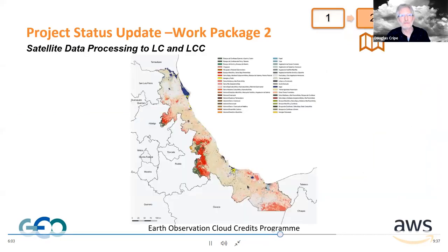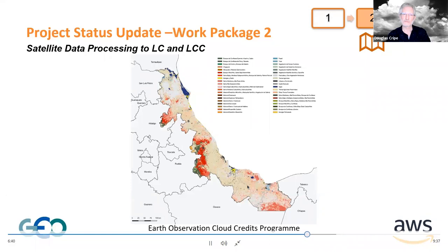Moving on to Work Package Two status — satellite data processing for land cover and land cover change maps for five states. Results shown are for the state of Veracruz as an example. A crowd mapping platform has been provided to receive rapid feedback from users on the products. Based on the original INEGI classification scheme of 31 classes, they could discern four additional land covers and 15 crop types at satisfactory accuracy levels of 75%.